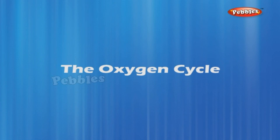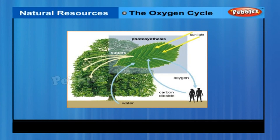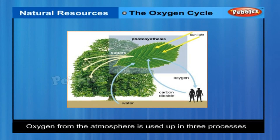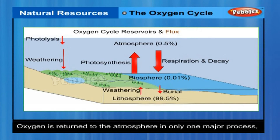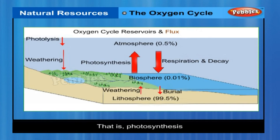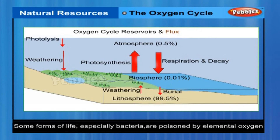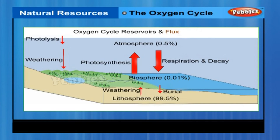The Oxygen Cycle. Oxygen is found in the elemental form in the atmosphere to the extent of 21%. It also occurs extensively in the combined form in the Earth's crust, as well as in the air in the form of carbon dioxide. Oxygen from the atmosphere is used up in three processes: combustion, respiration, and in the formation of oxides of nitrogen. Oxygen is returned to the atmosphere in only one major process — photosynthesis — and this forms the broad outline of the oxygen cycle in nature. Some forms of life, especially bacteria, are poisoned by elemental oxygen. In fact, even the process of nitrogen fixing by bacteria does not take place in the presence of oxygen.